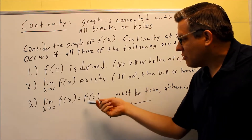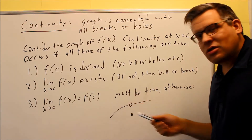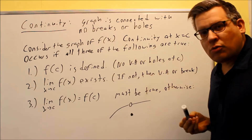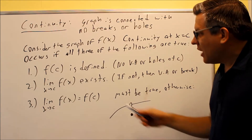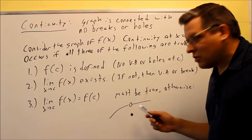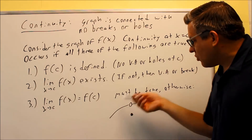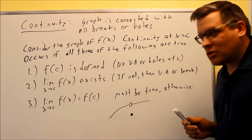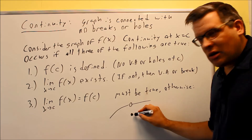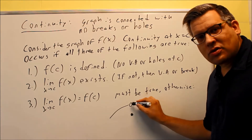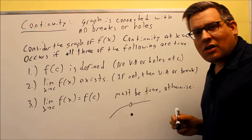The limit as x approaches c of f of x has to equal the y value when you plug c in — so the limit of f of x has to equal f of c. Why do we have that condition? In the situation shown, the first two conditions would be satisfied: f of c is defined because we have a closed circle, and the left and right hand limits approach the same number. But without the third condition, what's drawn here is not continuous. If the closed circle was drawn inside the open circle, then that would make it all connected — that's why you need the third condition.